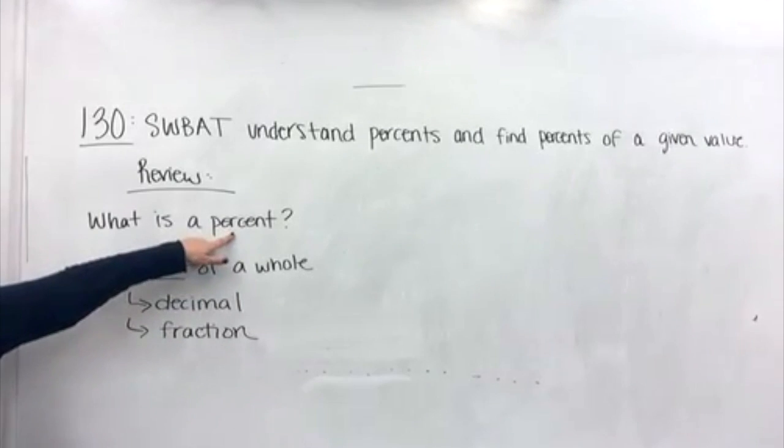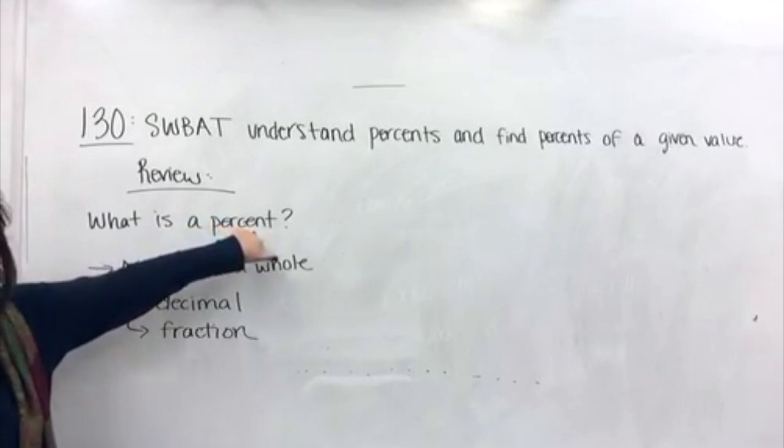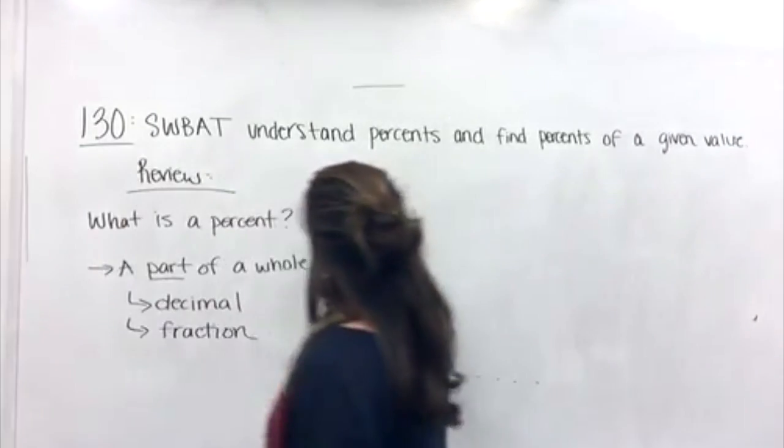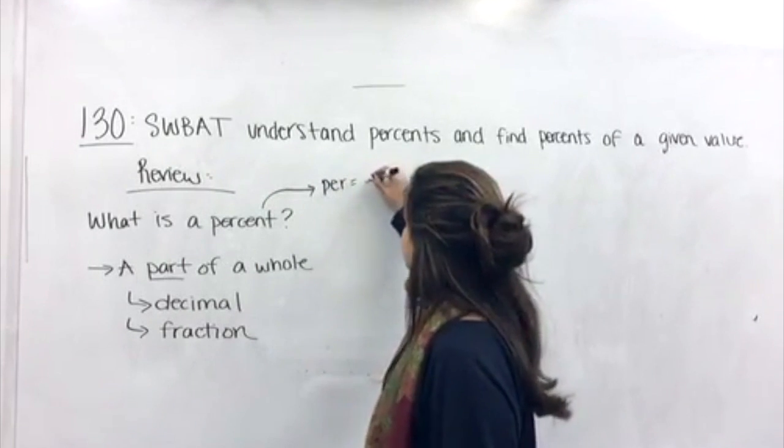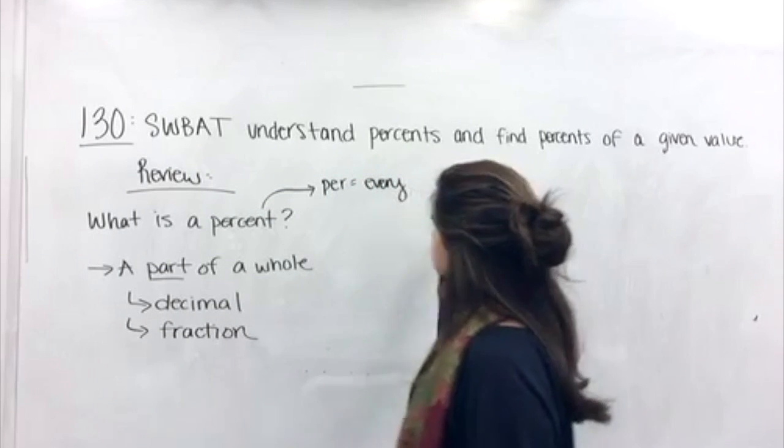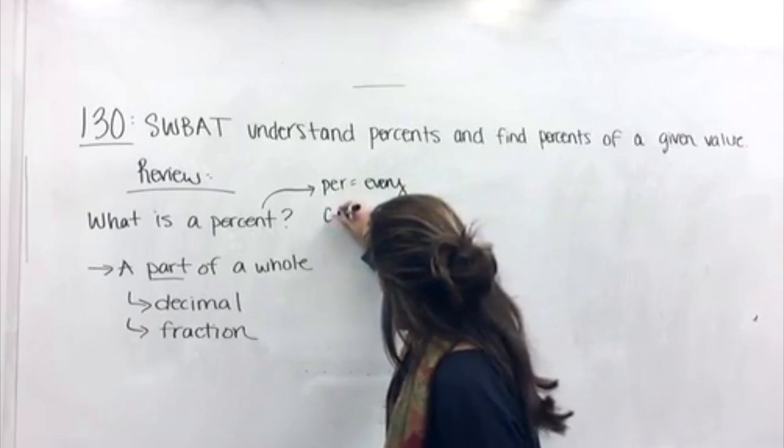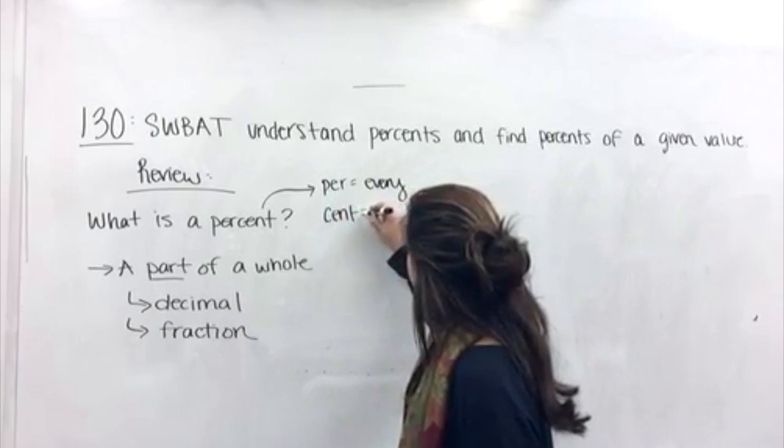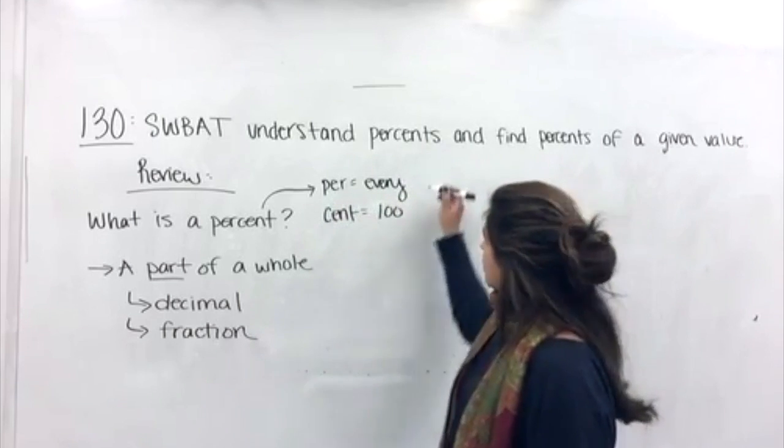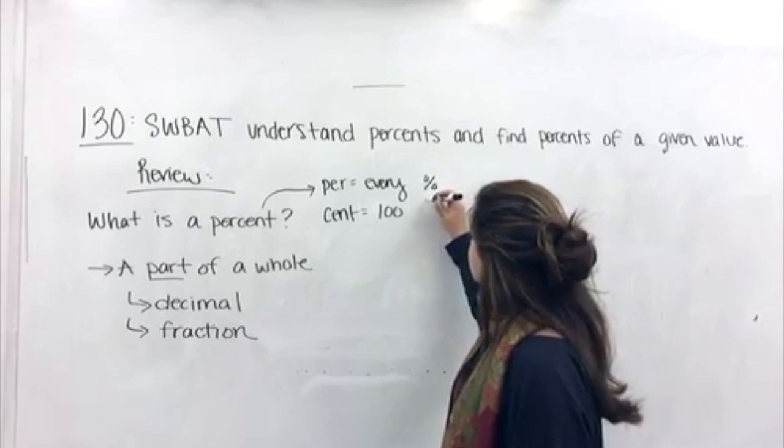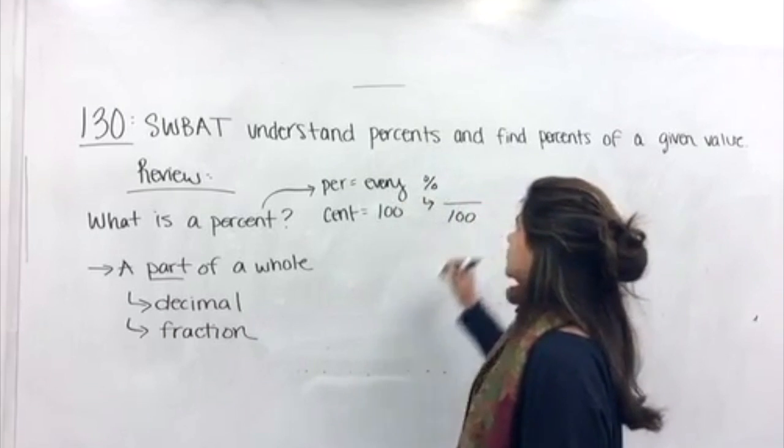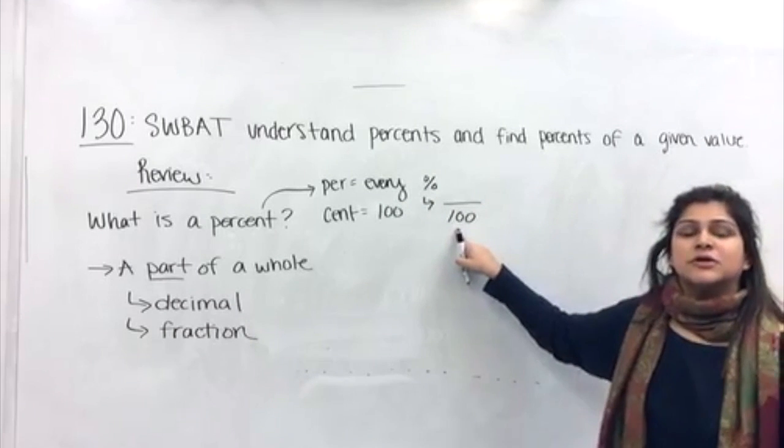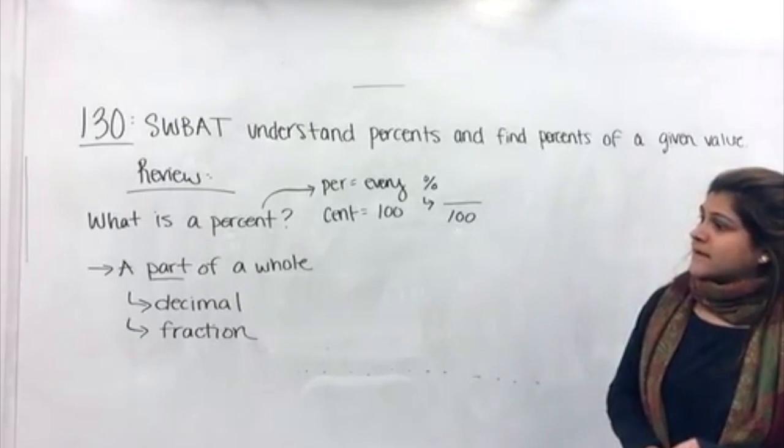Percents, decimals, and fractions are all the same thing. They just have a different way of appearing. They just look a little different. So, what's unique about a percent is that cent means hundred. So, remember, it means for every hundred. So, this right here, per means every, right? For each, every. And cent means one hundred. So, this symbol right here literally translates to every one hundred or out of one hundred. The denominator is your one hundred.